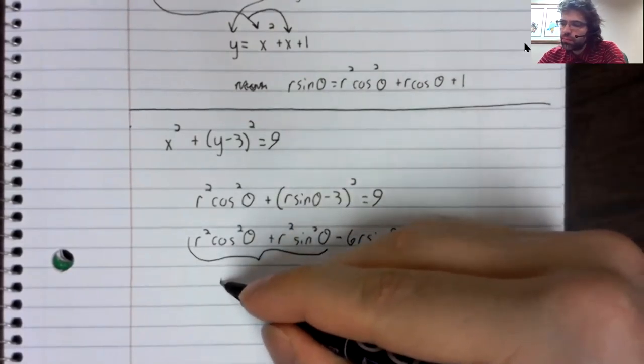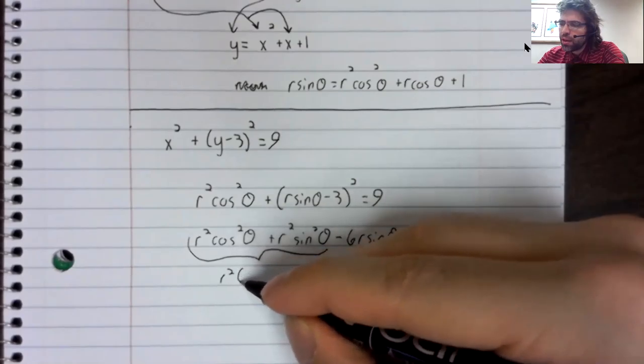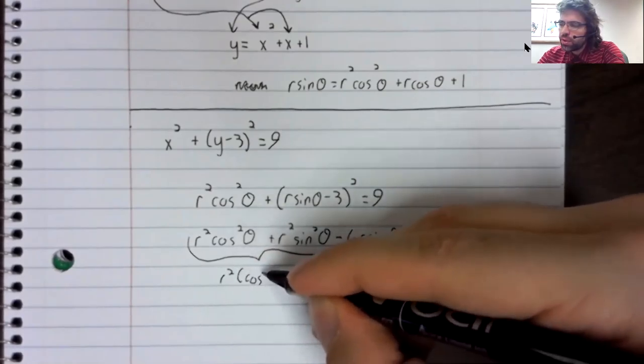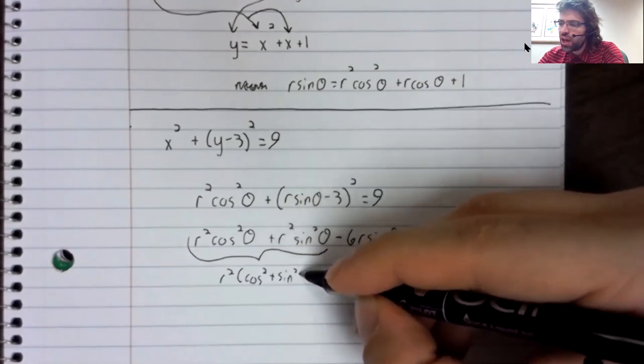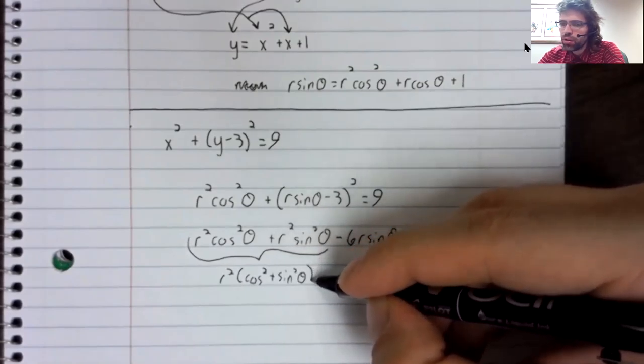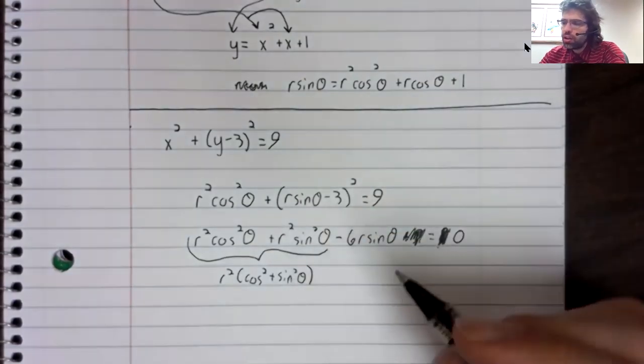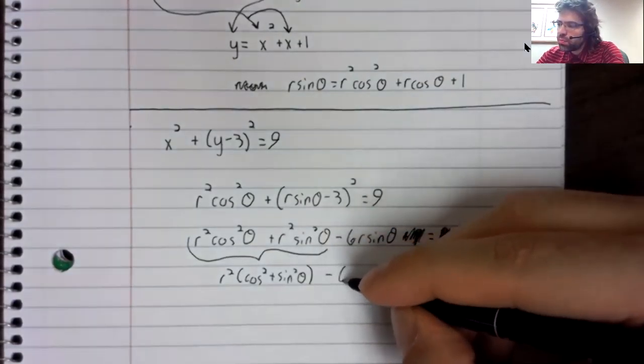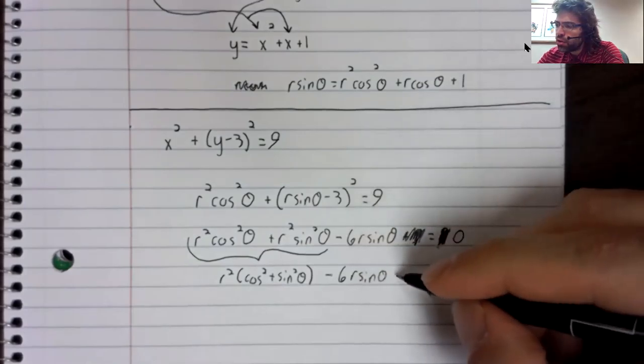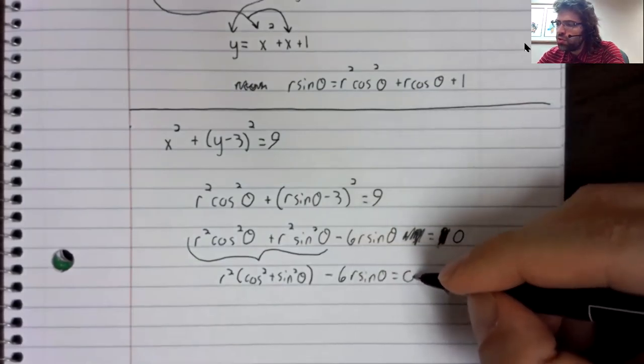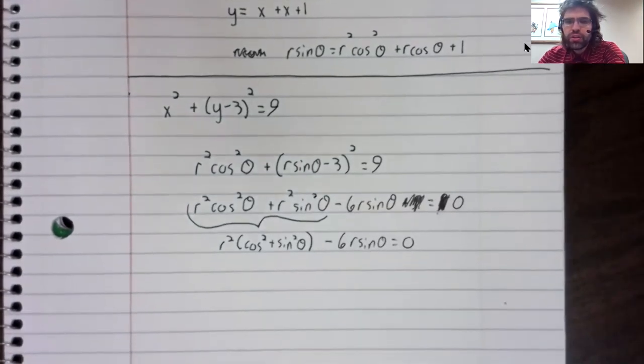r squared times the cosine squared plus the sine squared. The cosine squared plus the sine squared is one using the Pythagorean identity.